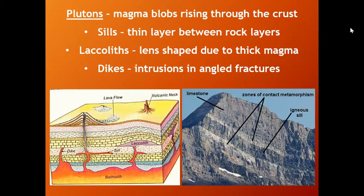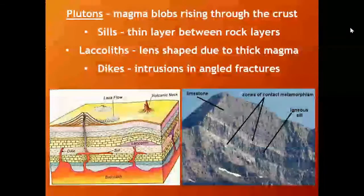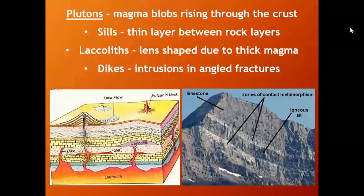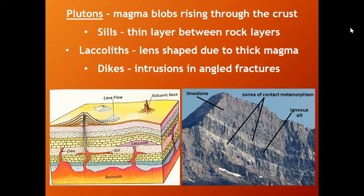There are sills, which are thin layers between rock layers — magma will burn its way in between rock layers and melt out the weaker layer. Laccoliths are where magma pushes its way in between layers and raises the layers above it to create a dome. We talked about dome mountains — oftentimes formed by laccoliths, like the Black Hills and the Adirondack Mountains. And dikes are intrusions through angled fractures — magma burning its way through weaker or existing fractures in the rock, sometimes even fault lines. These are plutons: rising blobs of magma that burn their way through the Earth's crust.